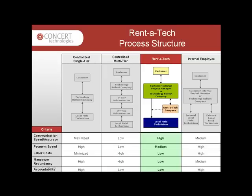In the Rent-to-Tech process structure, the customer or Technology Rollout Company uses a Rent-to-Tech company in a shared management effort of field technicians. An example of this is an online database of technicians in which the customer or Technology Rollout Company may be charged an access fee to acquire contact information for technicians. The technicians may also be charged a listing or job fee by the Rent-to-Tech company. While labor costs are typically low in this structure, a key disadvantage is a low level of manpower redundancy — if a technician does not show up, the customer or Technology Rollout Company must return to the Rent-to-Tech company for another technician, causing costly delays and missed deadlines.